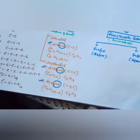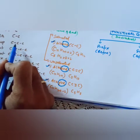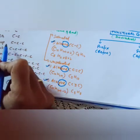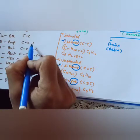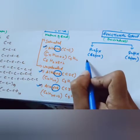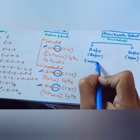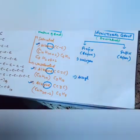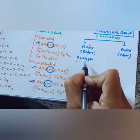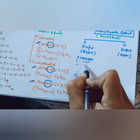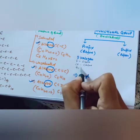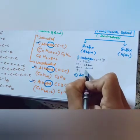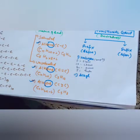For example, if there are three carbons with a double bond at the second carbon, the name will be prop + ene = propene. Now, functional groups: halogen is one type. If F is given, we write fluoro; if Cl is given, we write chloro; if Br is given, then bromo. Halogens are in Group 17 of the periodic table. If I is given, we write iodo.